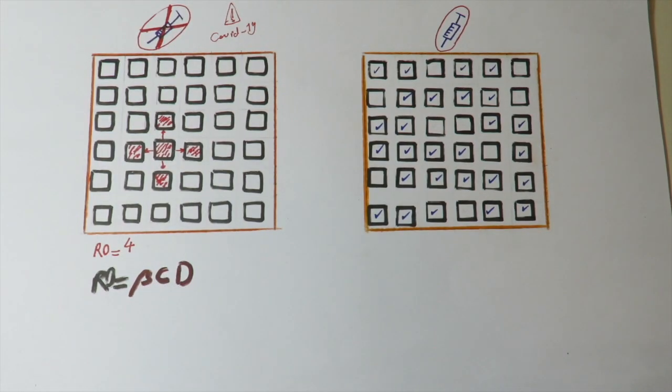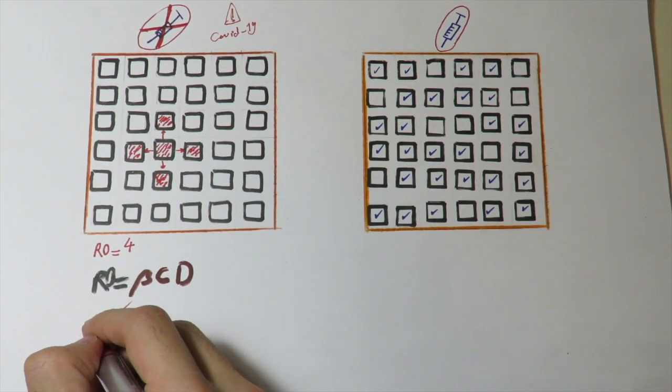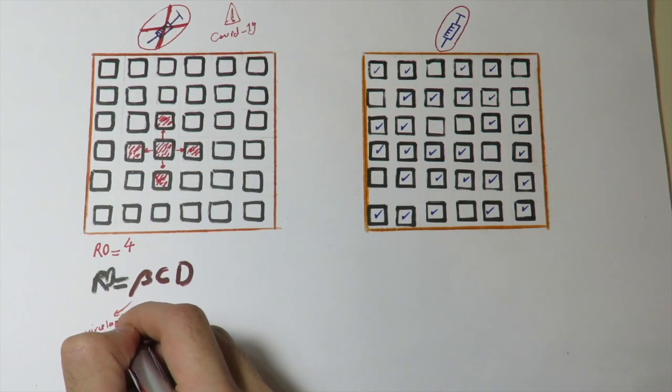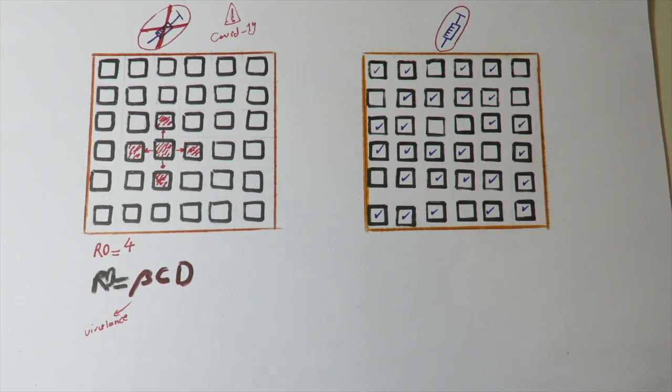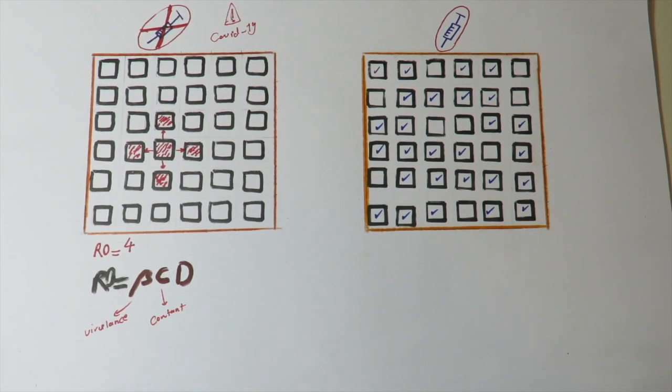So what do these stand for? Well, beta is an indicator of the virus or infective organism virulence or infectivity. And C, which stands for Contact, is also an indicator of R0, and D stands for duration.